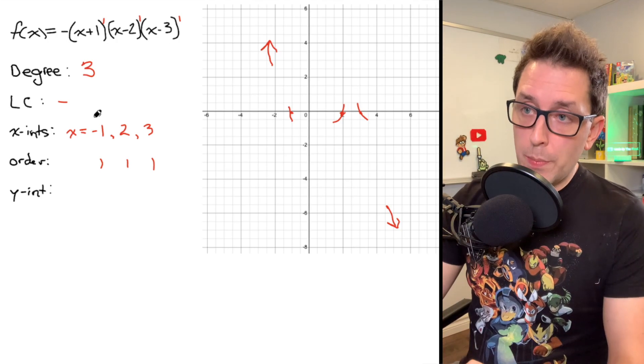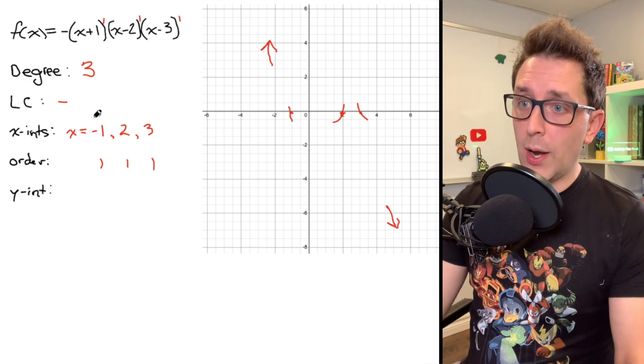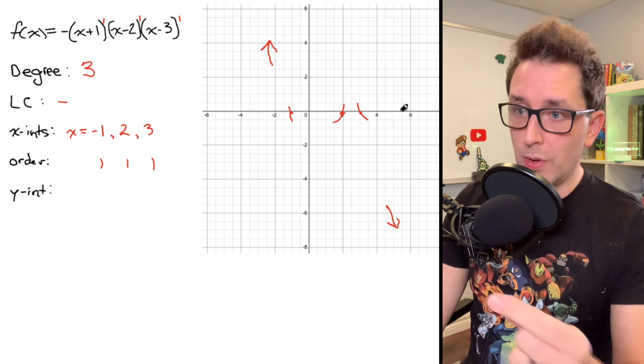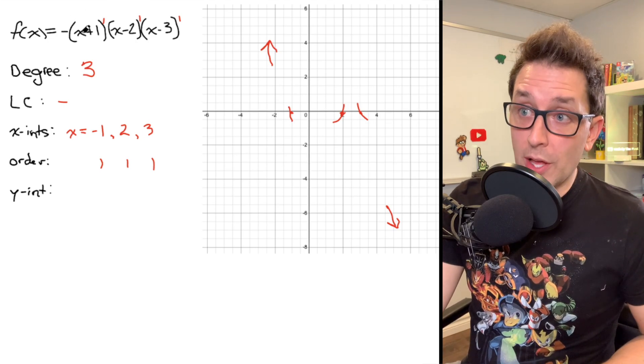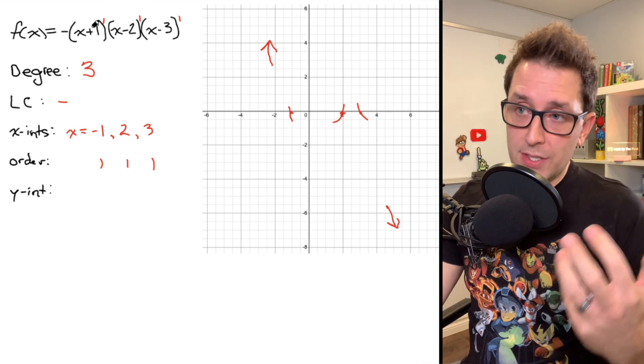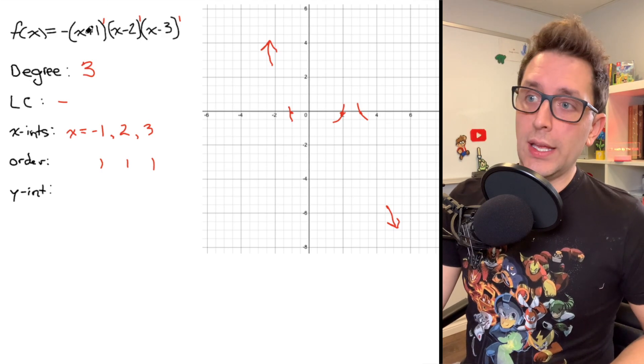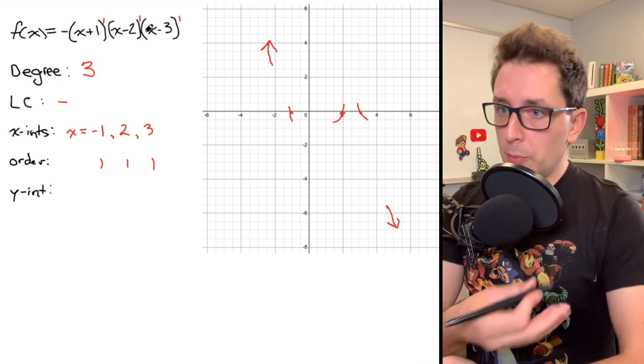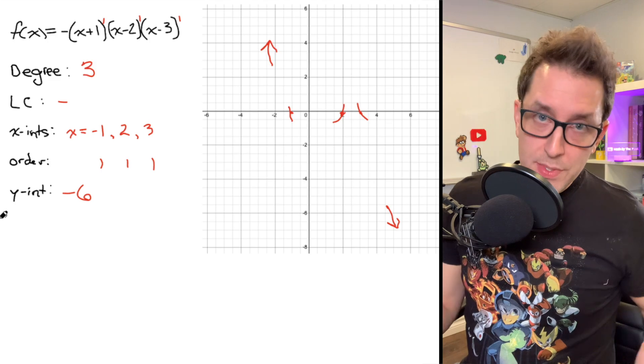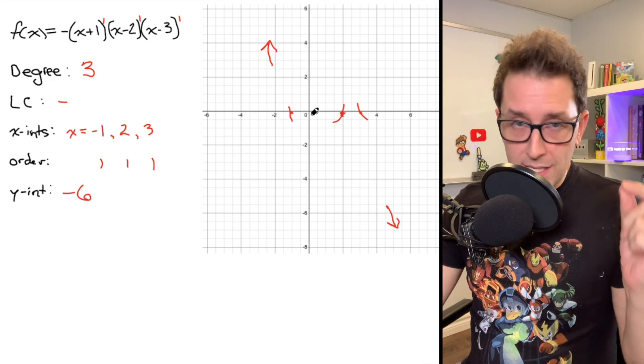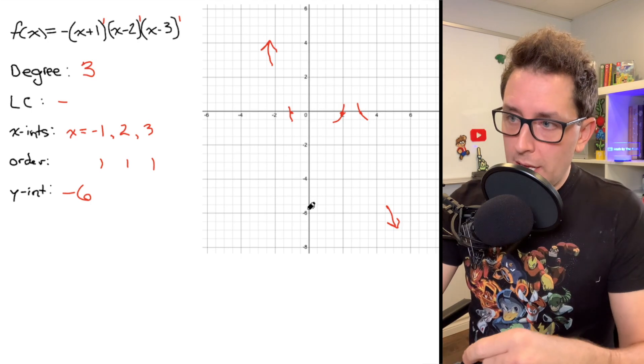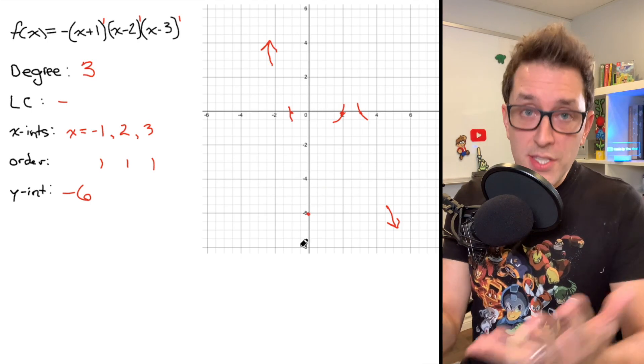So we've got a degree 3 polynomial, a negative leading coefficient. We've got order 1 x-intercepts at negative 1, 2, and 3. The last thing we need here is our y-intercept. And the y-intercept we know happens when the value of x is equal to 0. So I can just put 0 in for x in each of these sets of brackets, multiply everything together. And to save you some time, we have a y-intercept at negative 6. So I'm going to plot that on my graph. The x value at the y-intercept is going to be 0. I'm going to head down to negative 6 and plot a point right there.